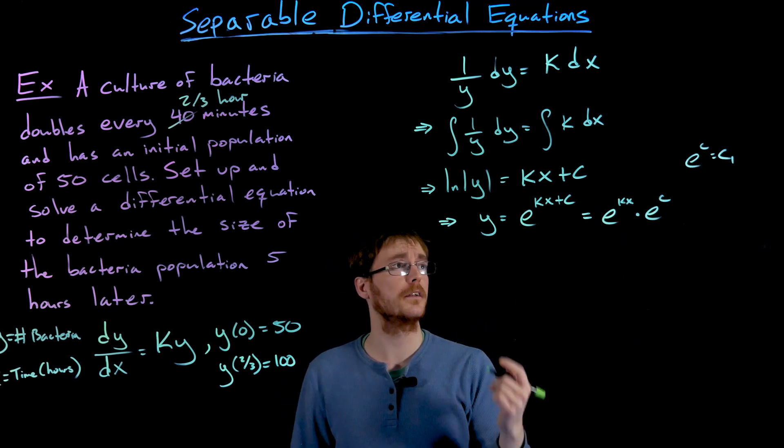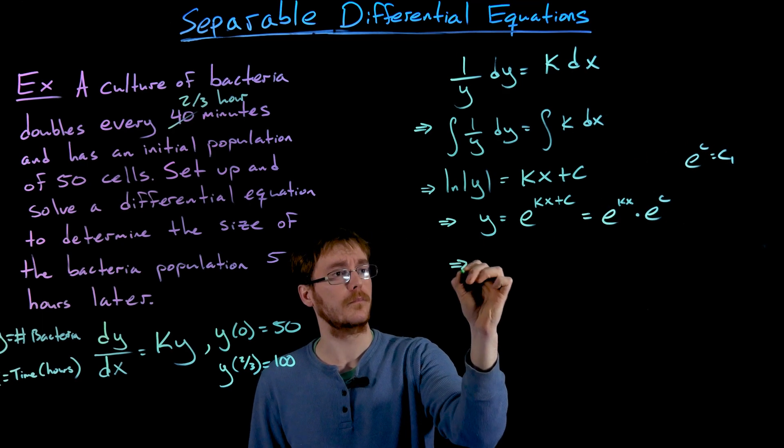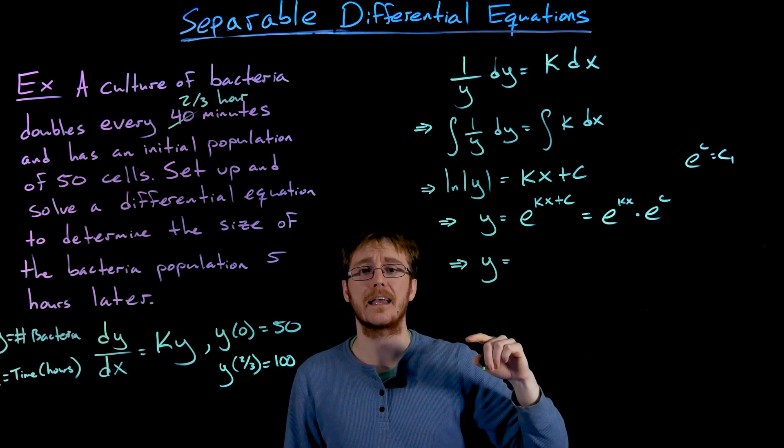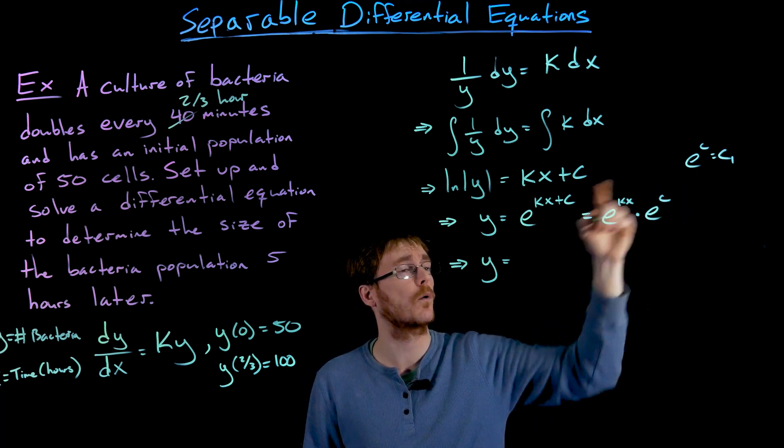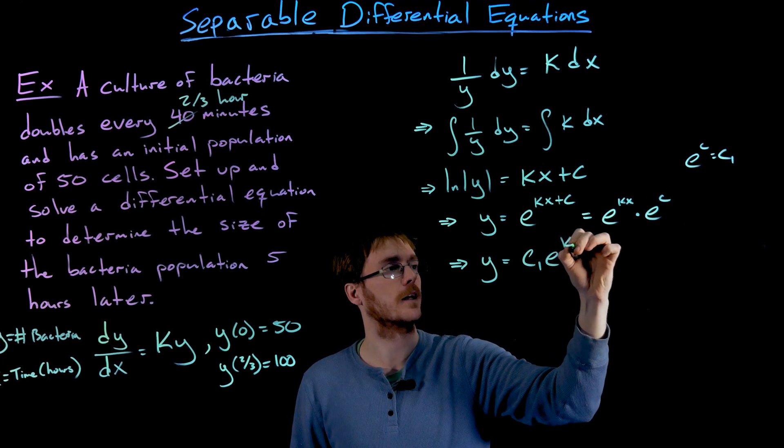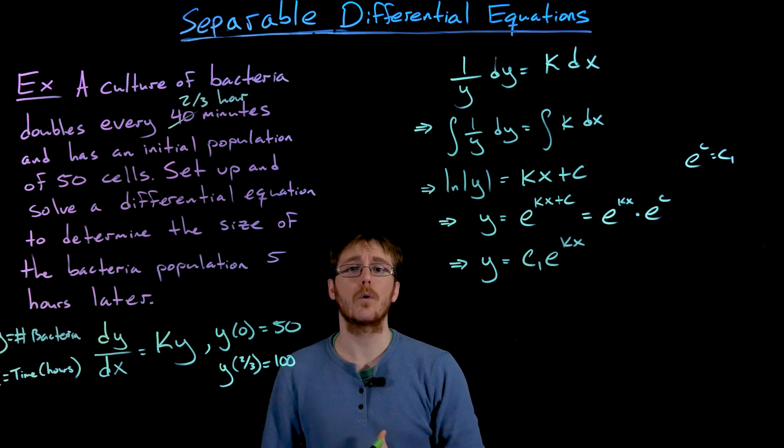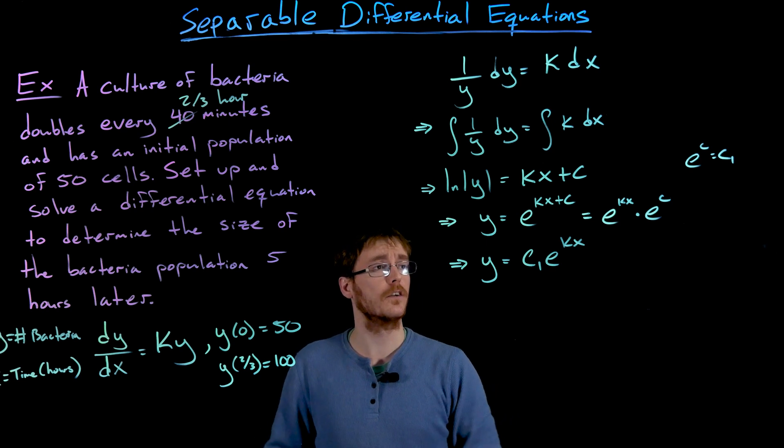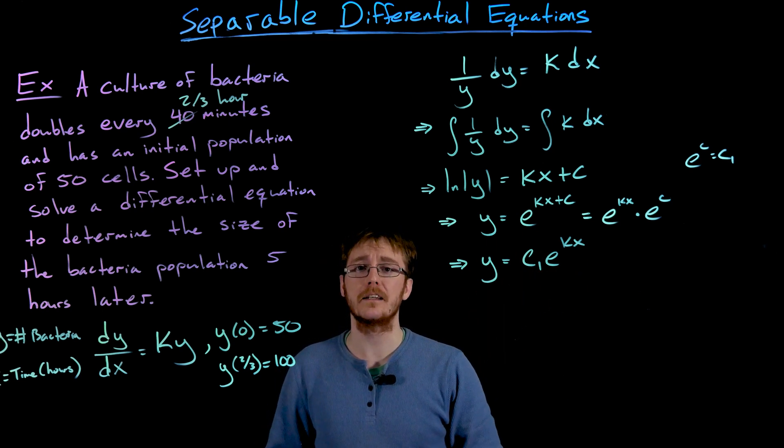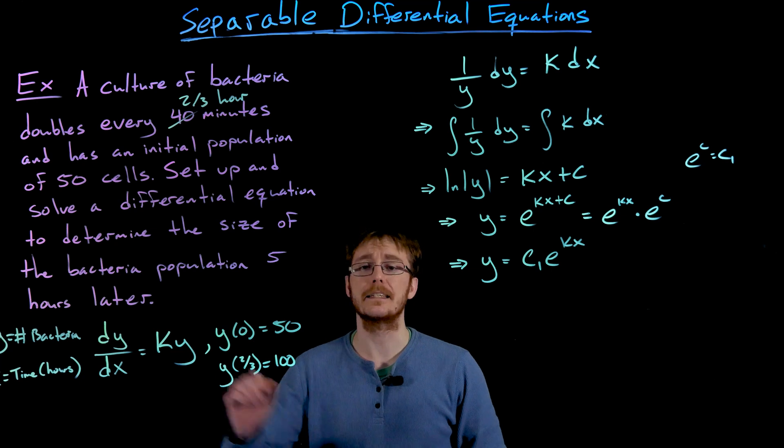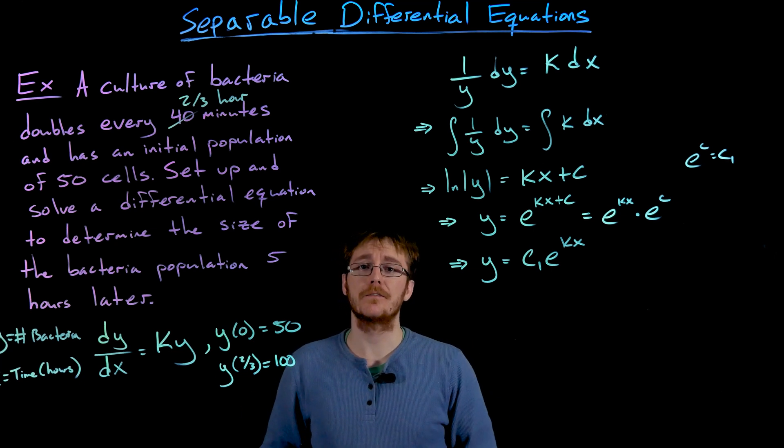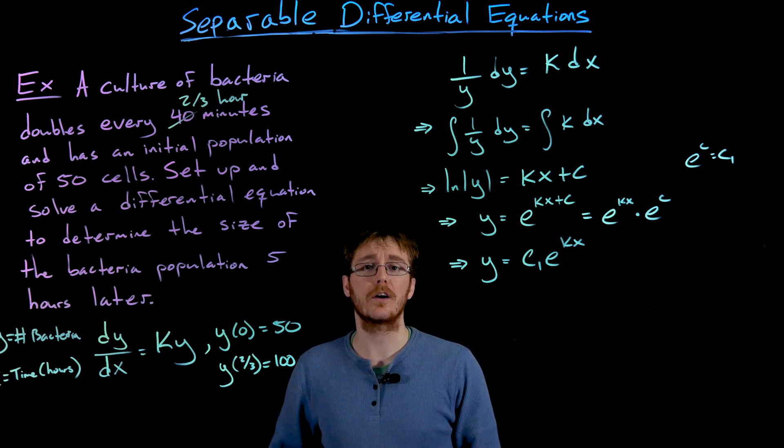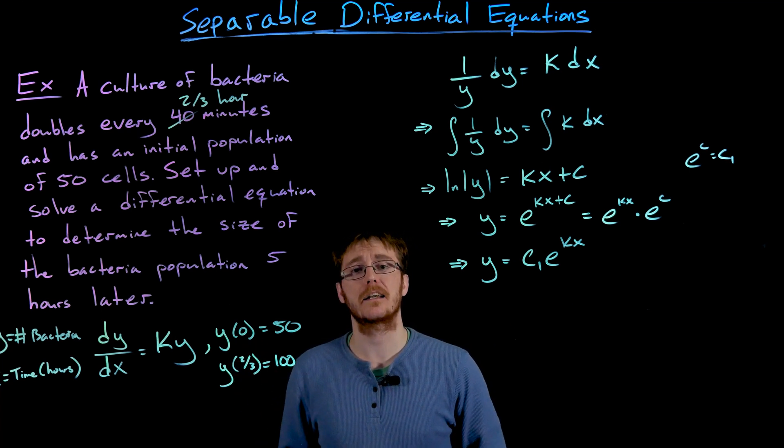So now our model is going to look like y is equal to e to the power of kx times c1. Let's just write that in a more standard way: c1 times e to the power of kx. And what we actually just did here is really went through the process of deriving this general exponential growth or decay model. But now what we still have left to do is find the value of c1 and k corresponding to our initial conditions and the context of this problem.